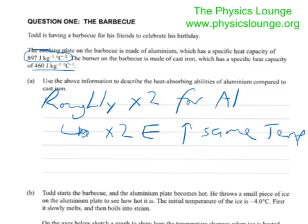So for 1 degree, for instance, it's going to take 460 joules to raise a piece of iron, 1 kilogram, by 1 degree. It's going to take 897 joules to raise a kilogram of aluminium by 1 degree.